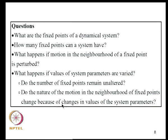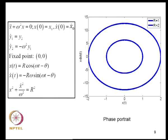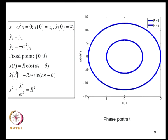Let us consider a linear undamped single degree of freedom system. The governing equation is X-double-dot + ω²X = 0, starting from initial conditions X-naught and X-naught-dot. Writing Y1-dot = Y2 and Y2-dot = −ω²·Y1, the fixed point is (0,0). The solution is X = R·cos(ωt − θ) and X-dot accordingly, where R and θ depend on the initial conditions.